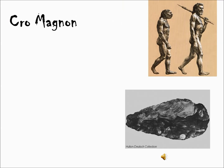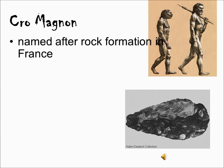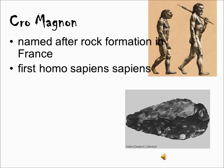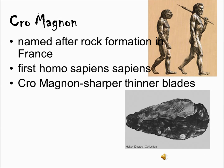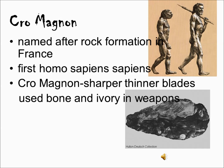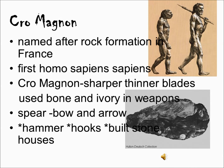Cro-Magnon are named after a rock formation where their remains were found in France. Cro-Magnon are considered the first modern humans — Homo sapiens sapiens. They were larger in height than Neanderthals. We know that Cro-Magnon used sharper, thinner weapons and were much more evolved in terms of how they used tools and resources.